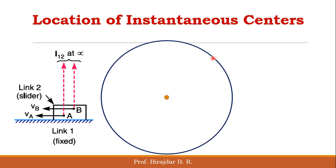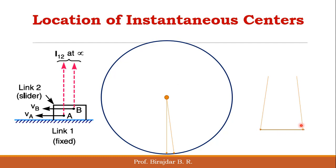To understand this, consider a circle. If we take a small arc of known radius, it appears as a straight line. As you increase the radius, the two lines look more and more like parallel lines. The body moving along this path rotates about a common center — that is the instantaneous center. As the radius approaches infinity, the arc looks like a straight line. So in this case, the instantaneous center lies at an infinite distance.